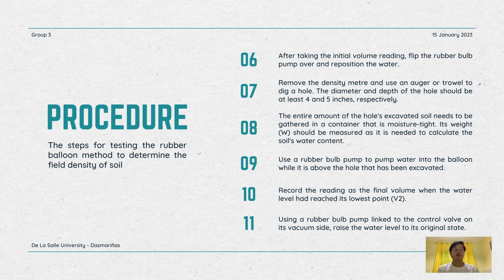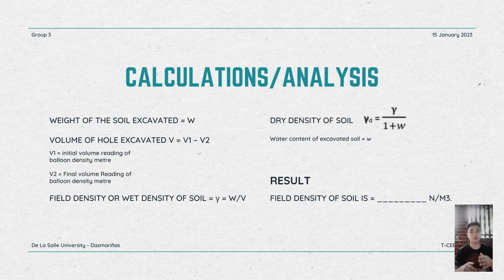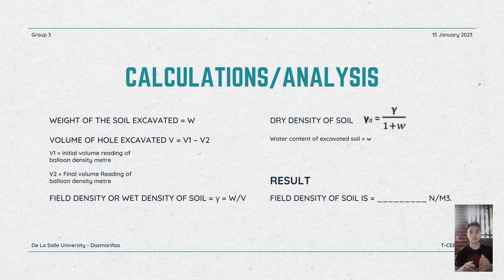Finally, using a rubber bulb pump linked to the control valve on its vacuum side, raise the water level to its original state. After finding all of the variables by completing all procedures, compute the weight of the soil excavated (W) and the volume of the hole excavated as V = V1 minus V2, where V1 and V2 are the initial and final volume readings of the balloon density meter. Then compute the field density or wet density of the soil using gamma equals the weight of soil excavated over the volume of the hole excavated. For dry density, use gamma_d equals gamma over 1 plus the moisture content of the excavated soil. The result gives the field density of the soil in newtons per meter cubed.